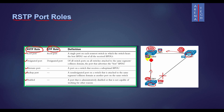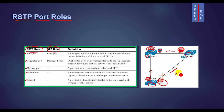The alternate port is a backup port with a less desirable path cost; all such ports remain in a blocked state. The backup port is a backup path to a segment where another bridge port is already connected. These ports receive BPDUs from their own switches but they remain in a blocked state.